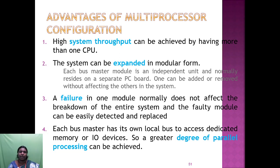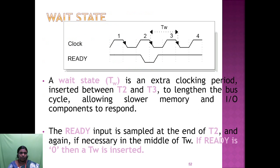Advantages of multiprocessor configuration: high system throughput, modular expansion, each bus master module is independent, a failure in one module does not affect the entire system, and each bus master has its own local bus for dedicated memory or IO. A wait state (TW) is an extra clock period inserted between T2 and T3 to lengthen the bus cycle, allowing slower memory and IO components to respond. The READY input is sampled at the end of T2 and again if necessary in the middle of TW.